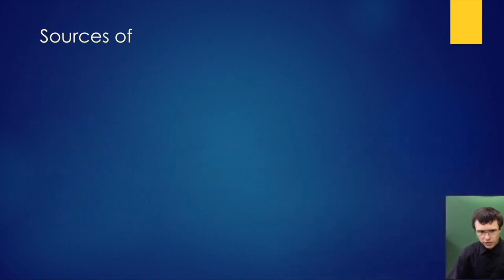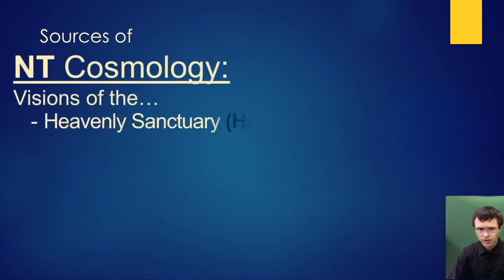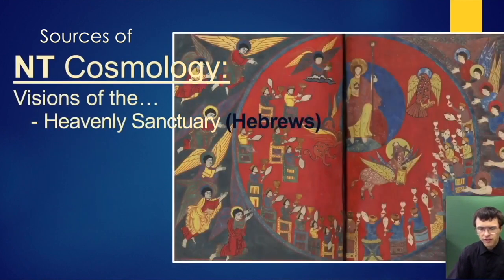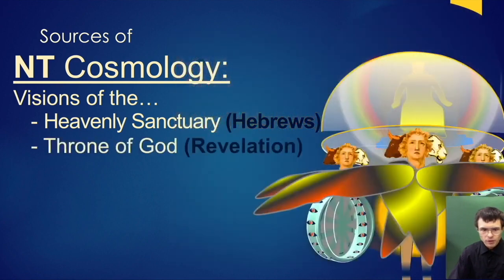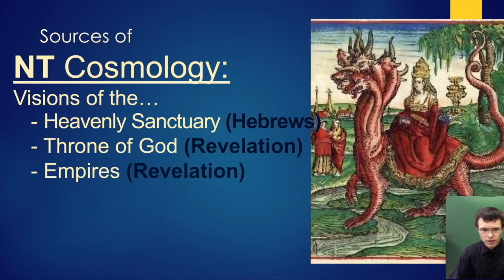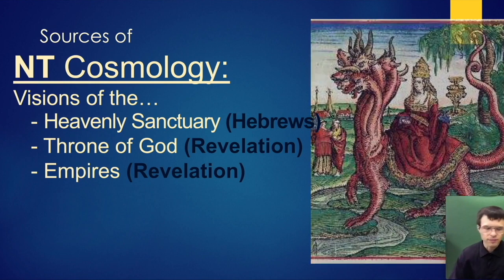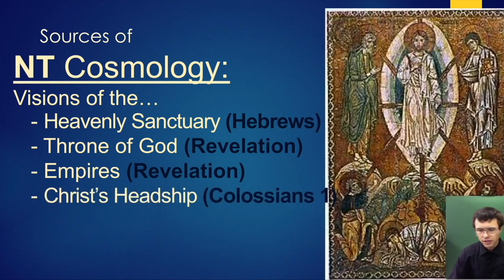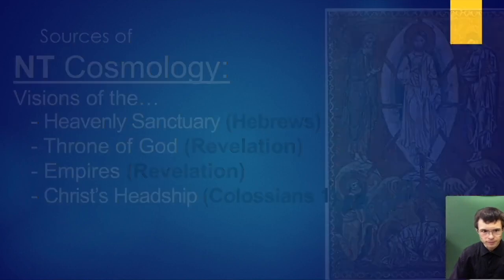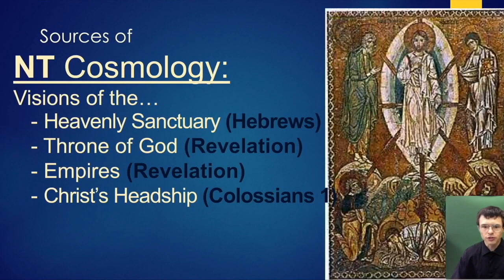A lot of the constellations here are also going to come from New Testament cosmology: descriptions of the heavenly sanctuary in the book of Hebrews by Paul, also the throne of God in the book of Revelation chapter 4, also empires in Revelation chapters 11 to 13, and lastly about Christ's headship in Colossians 1. These are just the major sources; there are many others in addition to these.